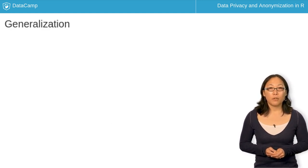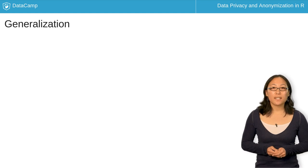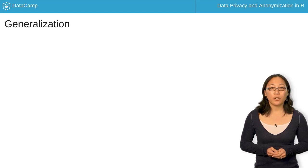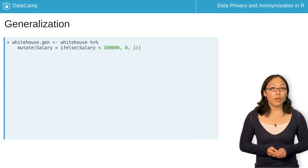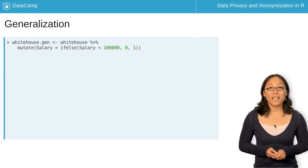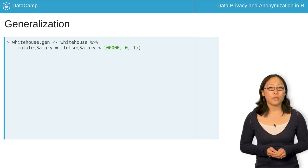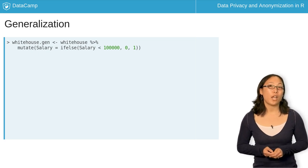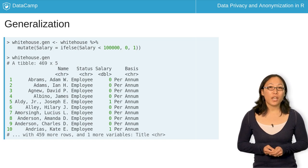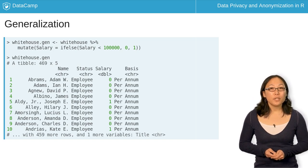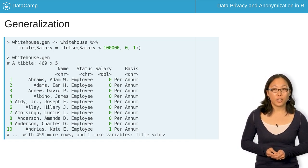You apply generalization by converting salary to a binary column. Everyone who makes less than $100,000 will be assigned 0, and others who make $100,000 or more will be assigned a 1. You can accomplish this by using the mutate and if-else functions, as shown here.